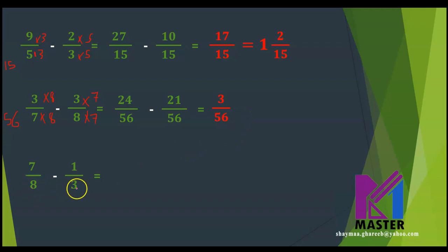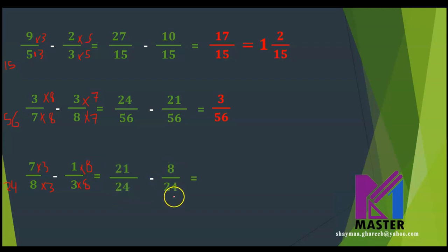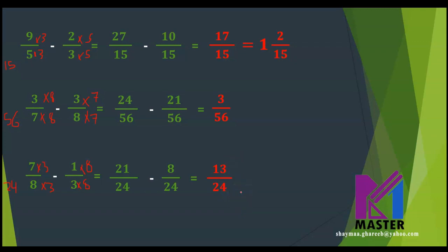For the next one, I have 8 and 3 as denominators. The least common multiple between them is 24. The 8 is multiplied by 3 to give 24, up and down. And the 3 is multiplied by 8 to give 24, up and down. The new fractions will be 21 over 24 minus 8 over 24. 21 minus 8 equals 13, so the answer is 13 over 24. Can I simplify this fraction? No. Can I write it as a mixed number? No, because this is not an improper fraction.